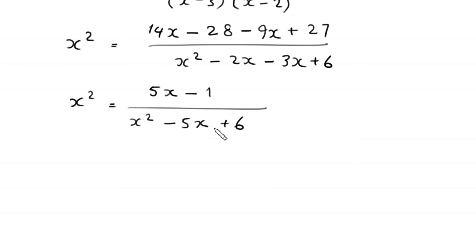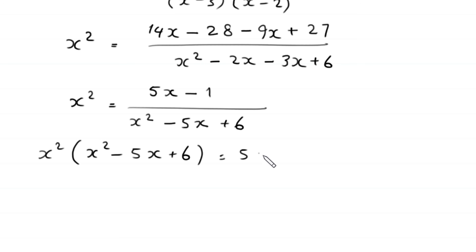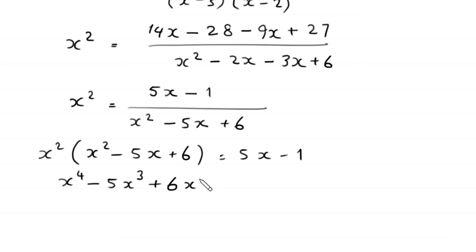This gives x squared times (x squared minus 5x plus 6) equals 5x minus 1. Expanding: x⁴ minus 5x³ plus 6x² minus 5x plus 1 equals 0. Moving 5x to the left-hand side and negative 1 becomes plus 1, giving x⁴ minus 5x³ plus 6x² minus 5x plus 1 is equal to 0.